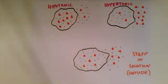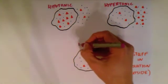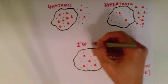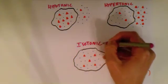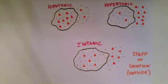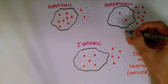And the last one, the stuff on the outside and the inside is equal, and so we call this an isotonic environment. Iso meaning equal. From the last video, recall we talked about osmosis, which is the natural diffusion of water.